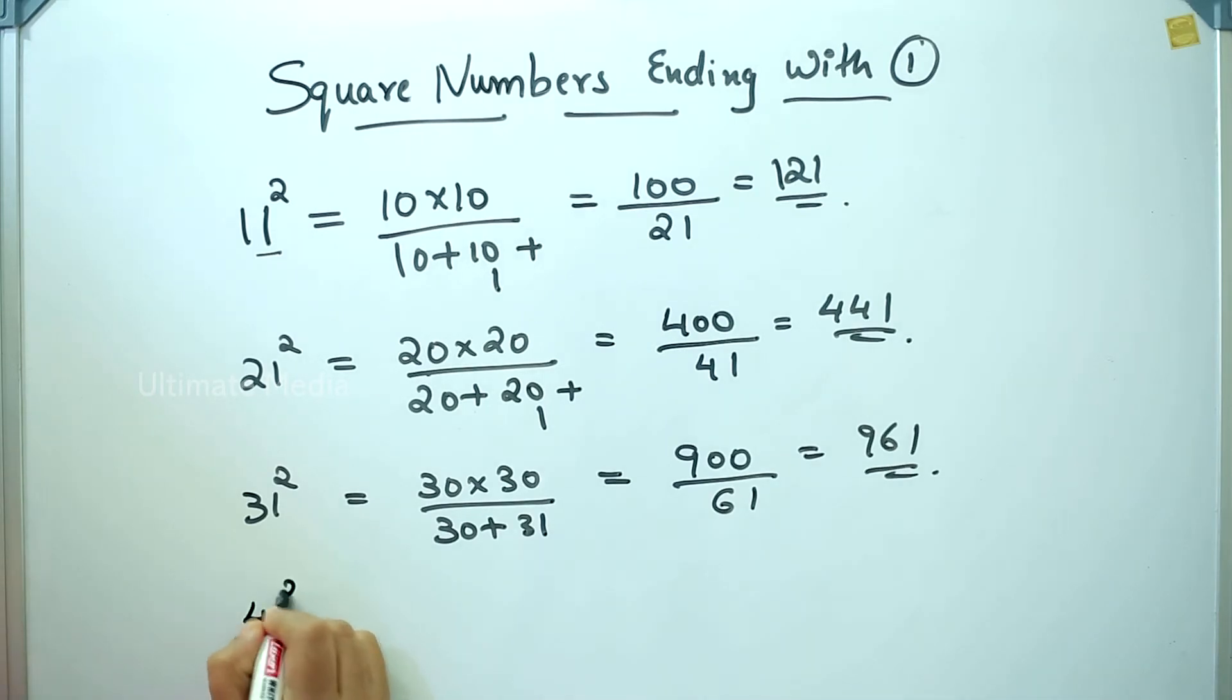41 square: 40 into 40 divided by 40 plus 41 equals 1600 divided by 81, that is 1681.